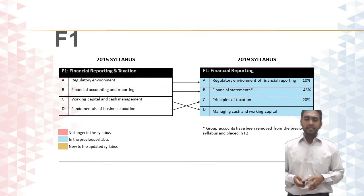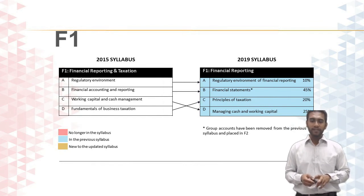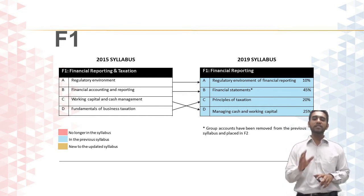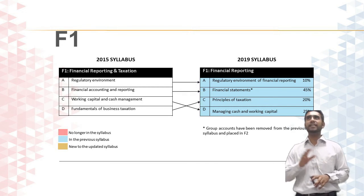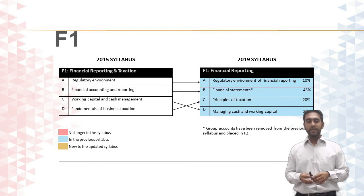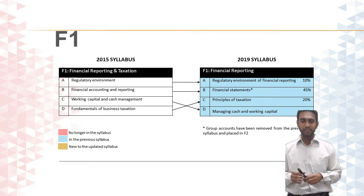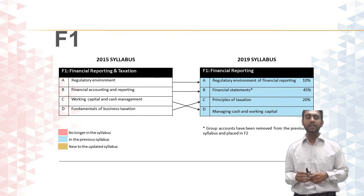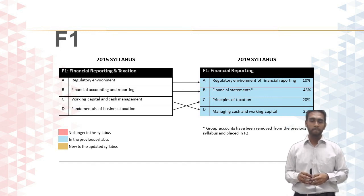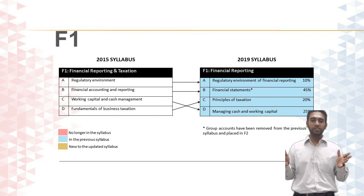The third subject at the operational level is F1, and comparing it with the 2015 syllabus all the topics have stayed exactly the same. The only point of note is that group accounting — the introduction to consolidated financial statements covered in F1 — has now been moved and completely taken into F2. So that is the overall change you will see at the operational level.